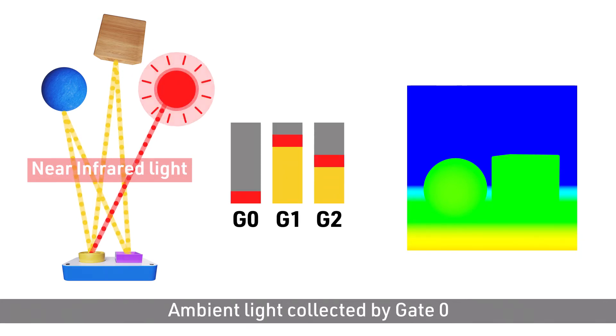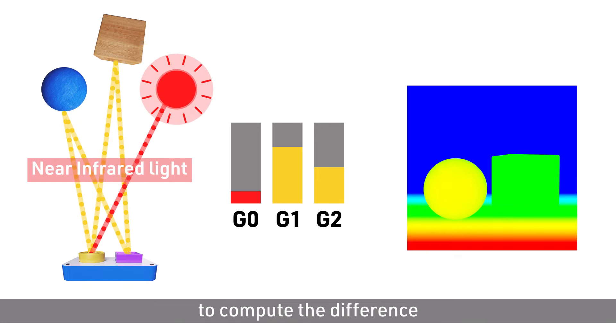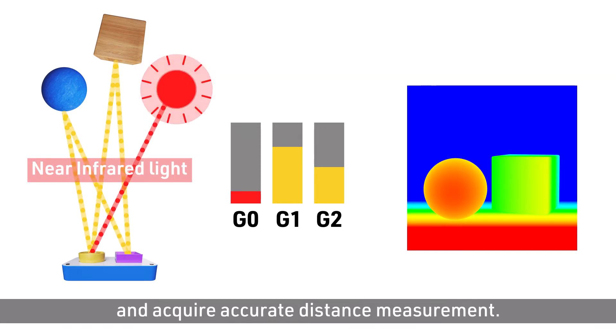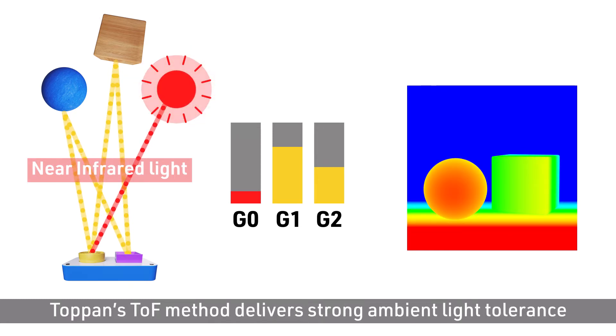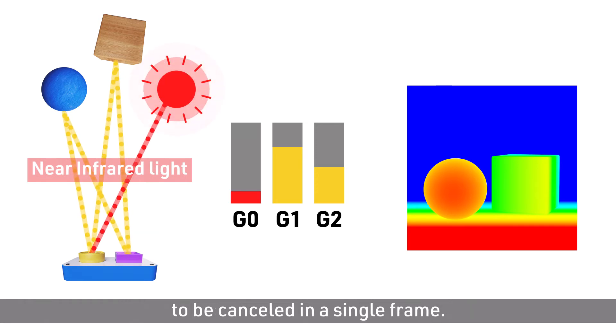Ambient light collected by gate 0 is subtracted from the modulated light collected by gates 1 and 2 to compute the difference and acquire accurate distance measurement. Toppan's TOF method delivers strong ambient light tolerance by enabling elements of ambient light noise to be cancelled in a single frame.